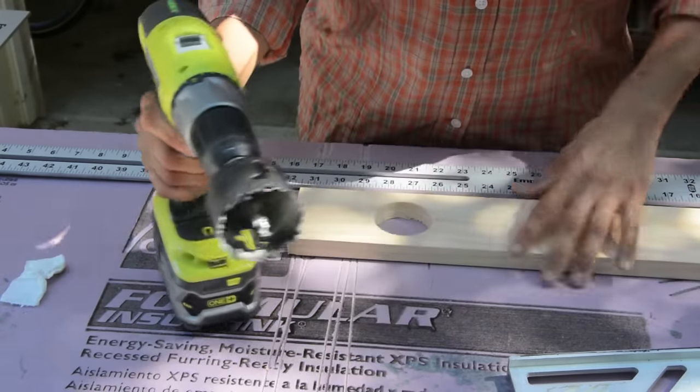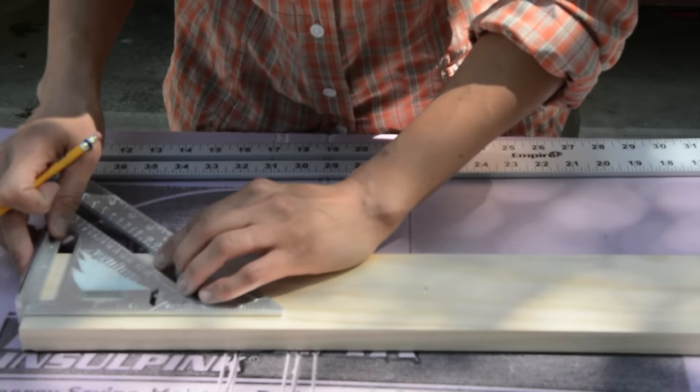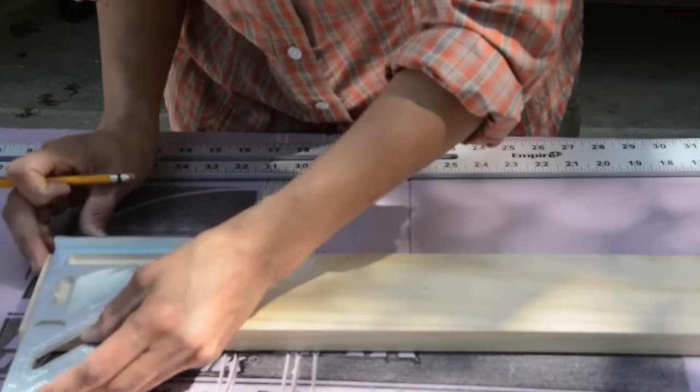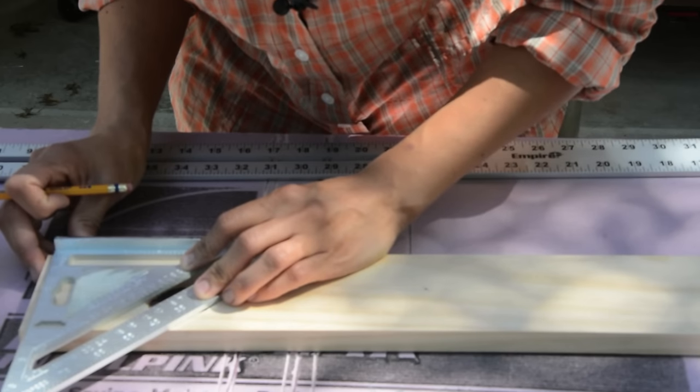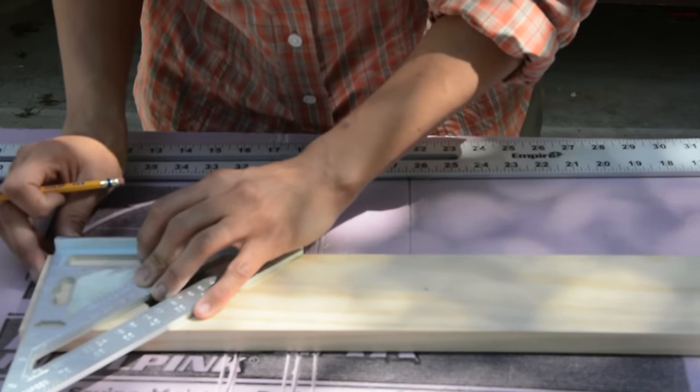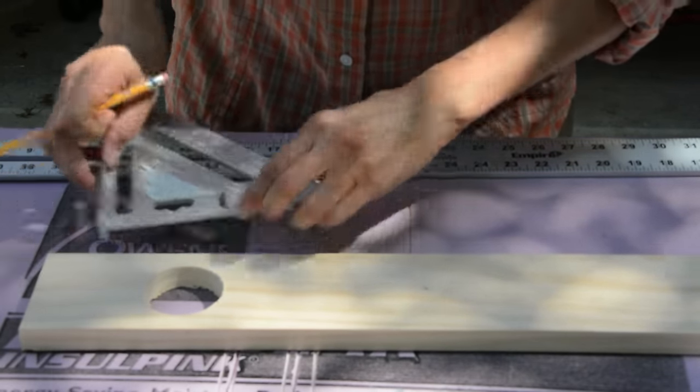So let's get started with cutting some holes. I've already done one here. So I marked the center of this board. I know this is three and a half inches. So I think, what is it? Like two, one and gosh, what is my math? One and three quarters I believe. Yeah, one and three quarters. So I just measured a line here.